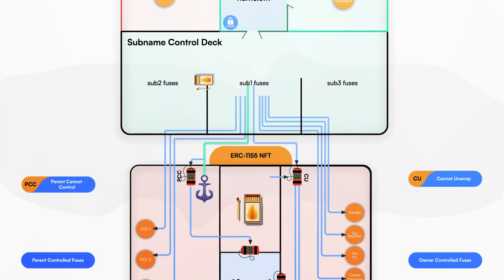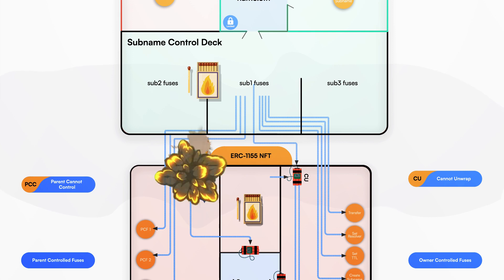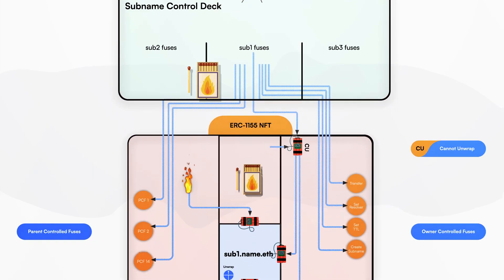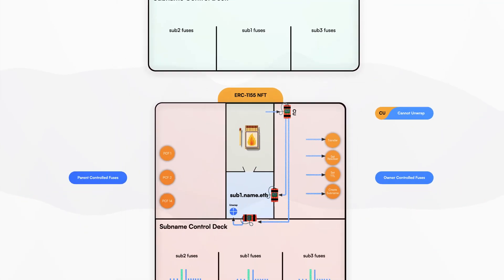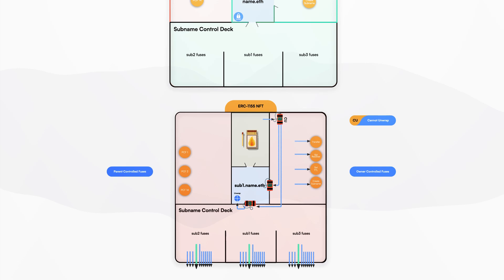To emancipate a name, the parent can burn a special fuse called Parent Cannot Control. This subname is now in the emancipated state. The parent can no longer burn any fuses or affect this subname in any way.